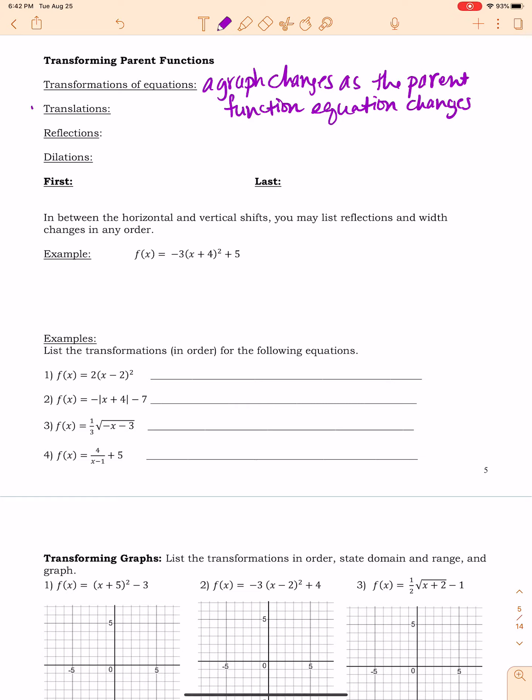So there are different types of transformations that we're going to talk about. Now, translations, these are just horizontal and vertical shifts in the graph. So in other words, moving right, left, up, down.